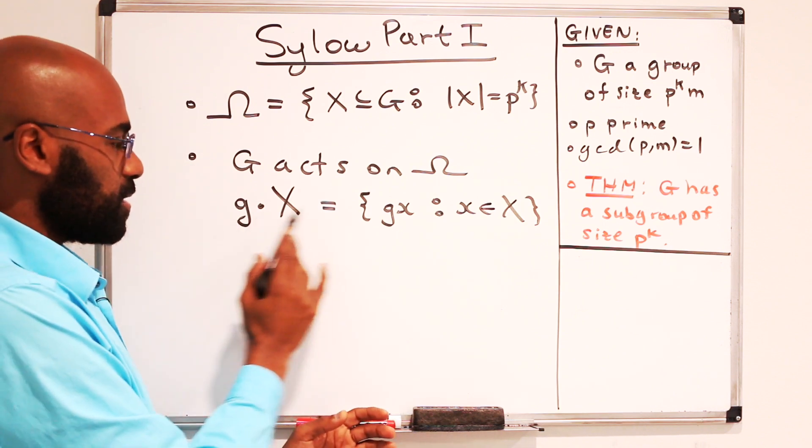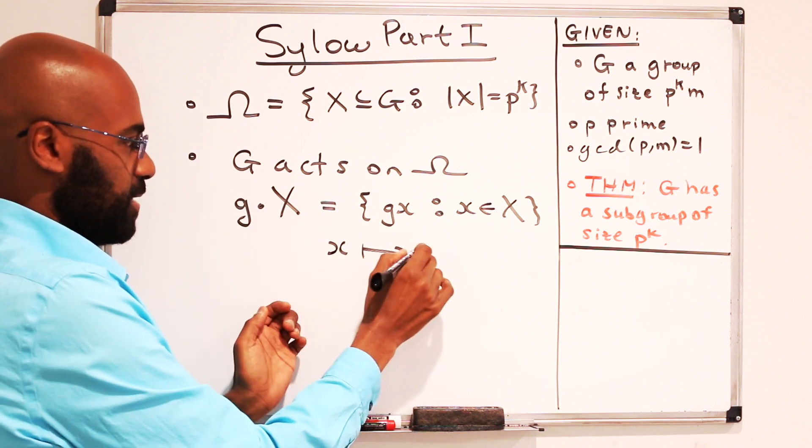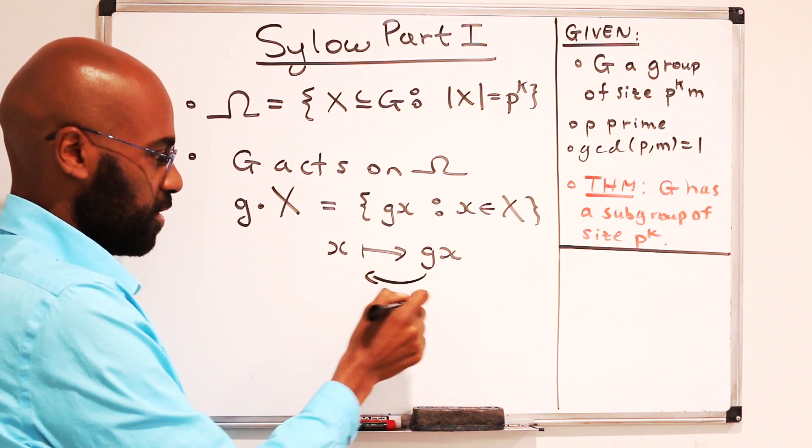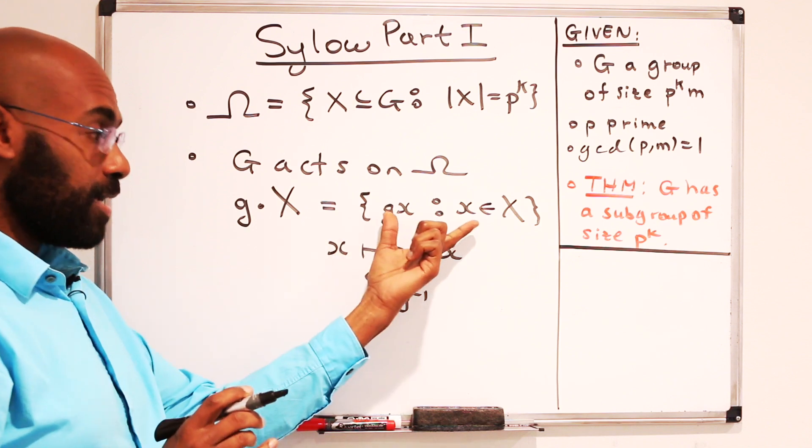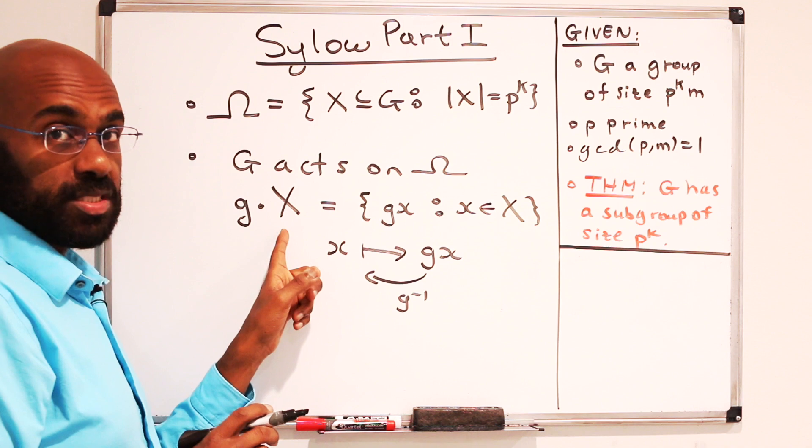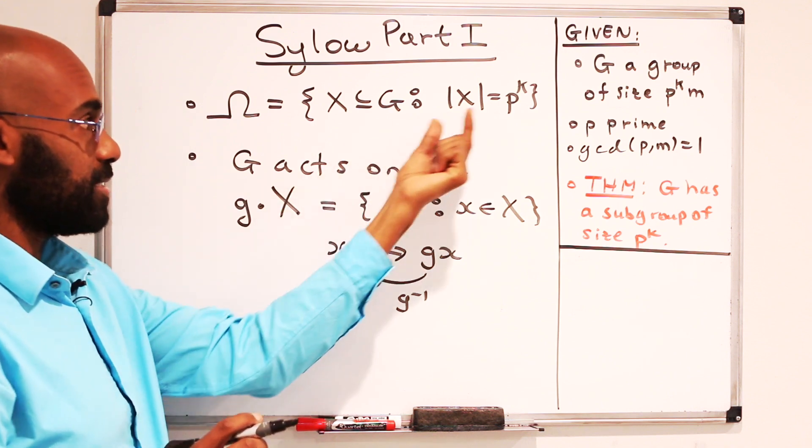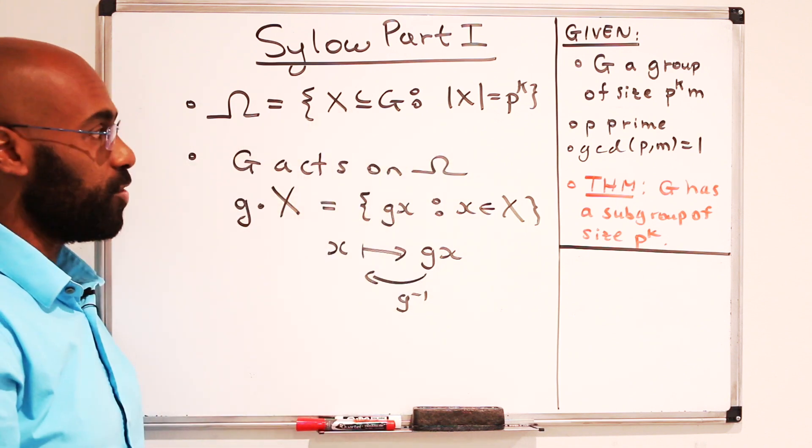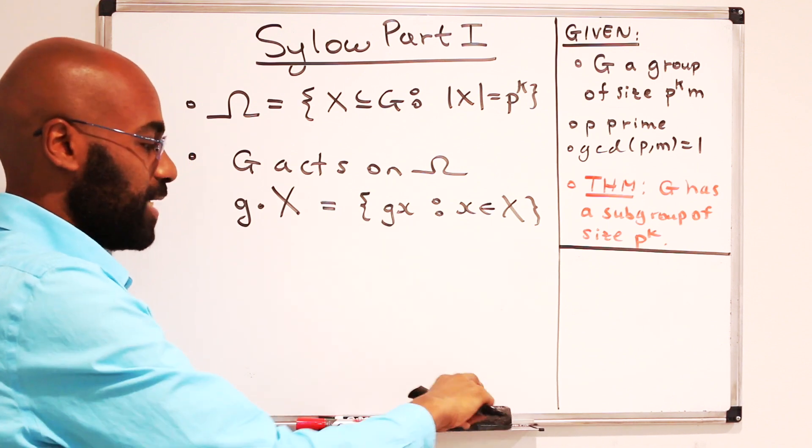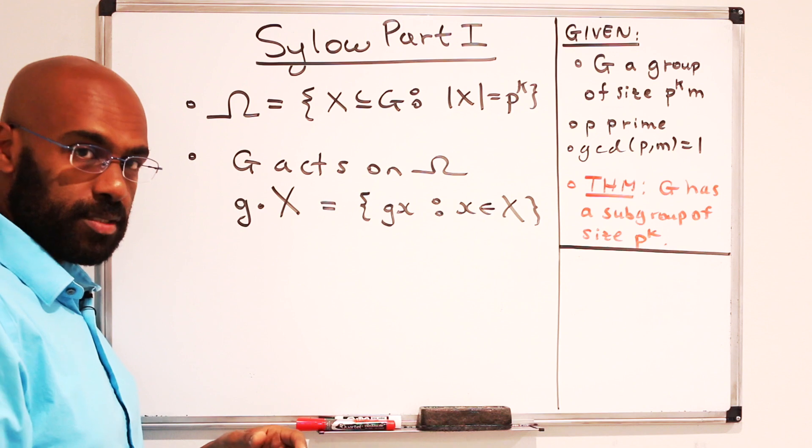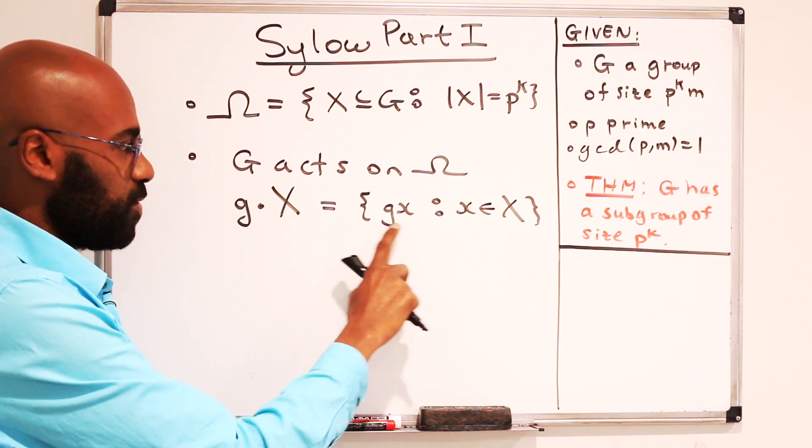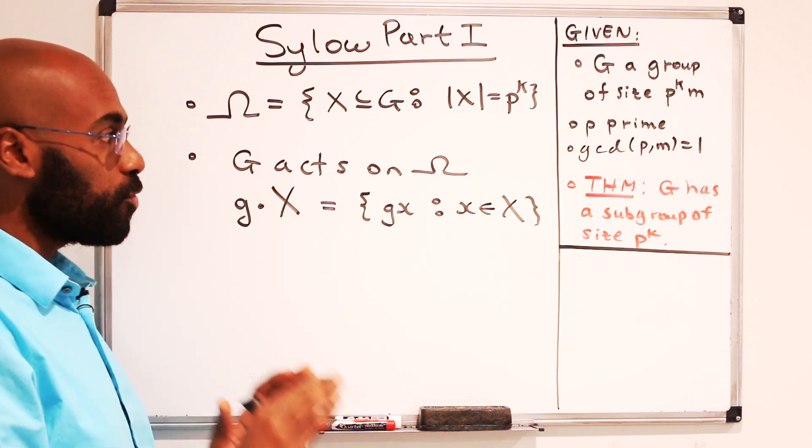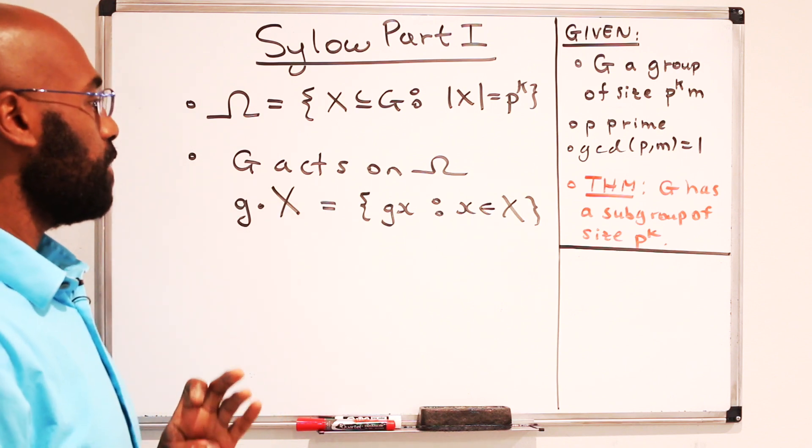So because the map that sends elements in X to gx is bijective, its inverse is multiplication on the left by g inverse, this thing at the end will end up having the same size as the original set X. So since X has size p to the k, this thing on the right actually does have size p to the k. So it is in our set here. Now we need to check all of the axioms to check this is actually a group action. But luckily, because we've constructed this by left multiplication by a group element, those things are actually quite manageable to realize. So I'm not going to prove them, but I'm going to just leave that to you. But this is a group action.